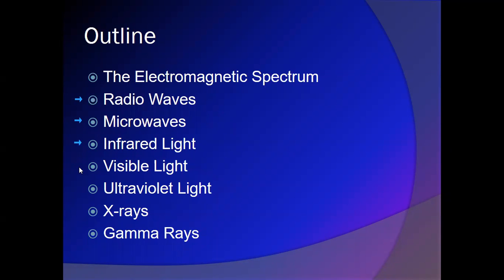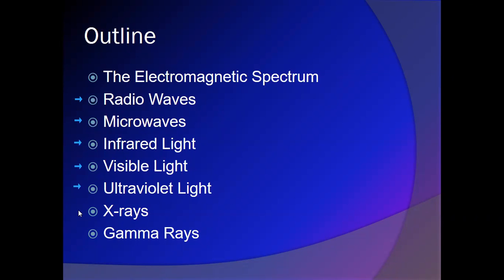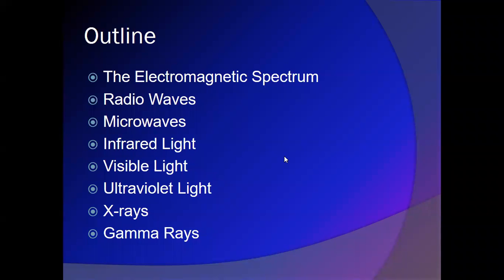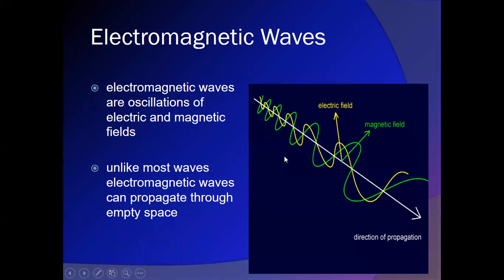Infrared light is light that is too long for our eyes to see. It acts more like the visible light we can see. Ultraviolet light has wavelengths too short to see — frequencies that are too high. Then we talk about parts of the electromagnetic spectrum that have a very strong particle nature: x-rays and gamma rays. So these are the seven parts of the spectrum.